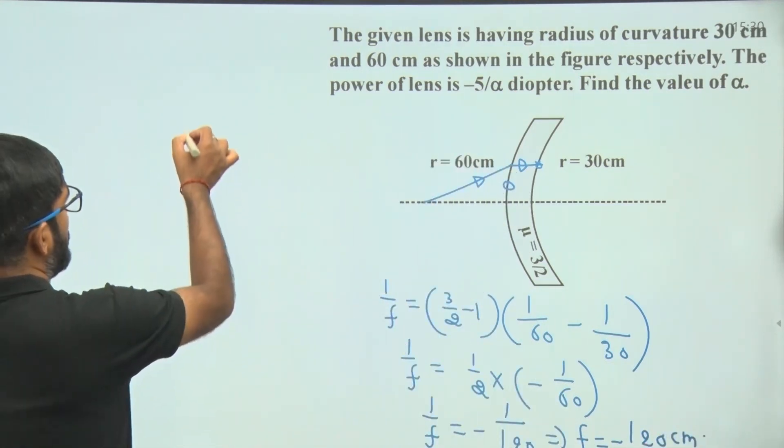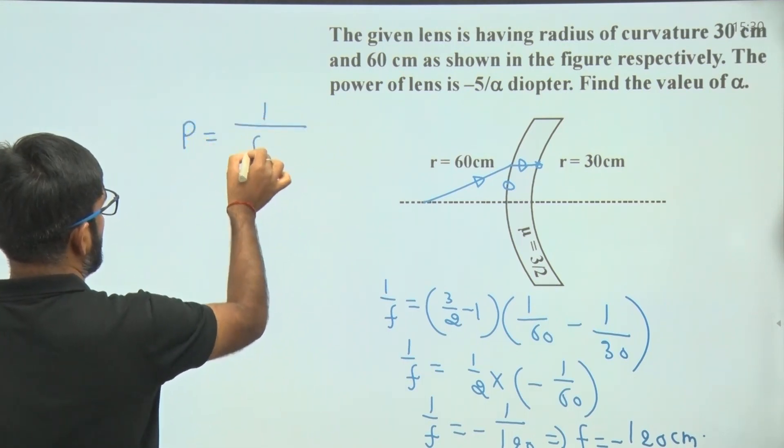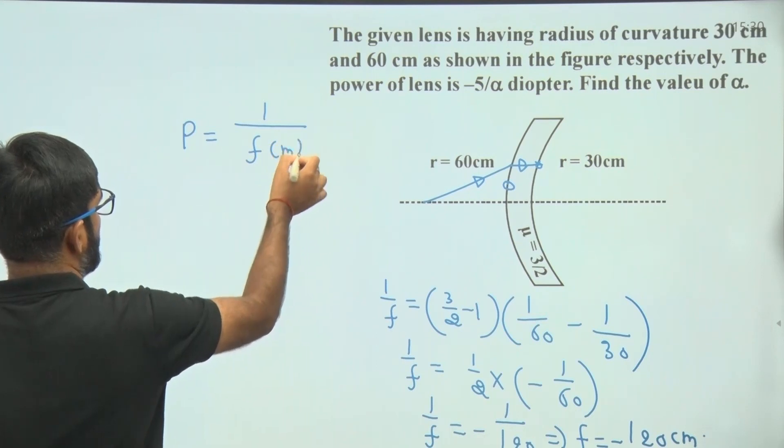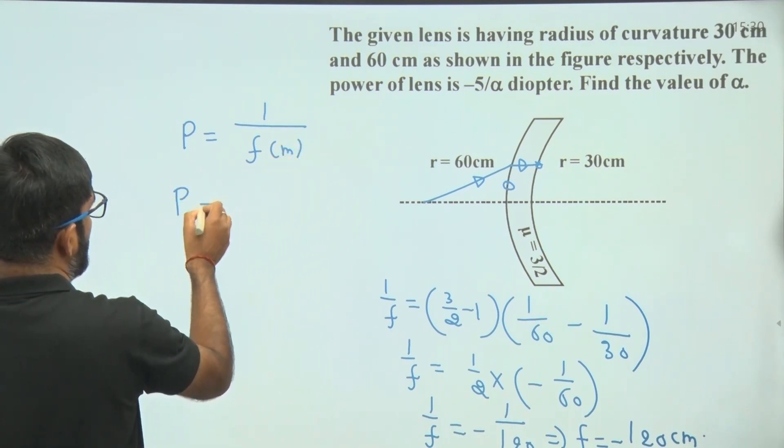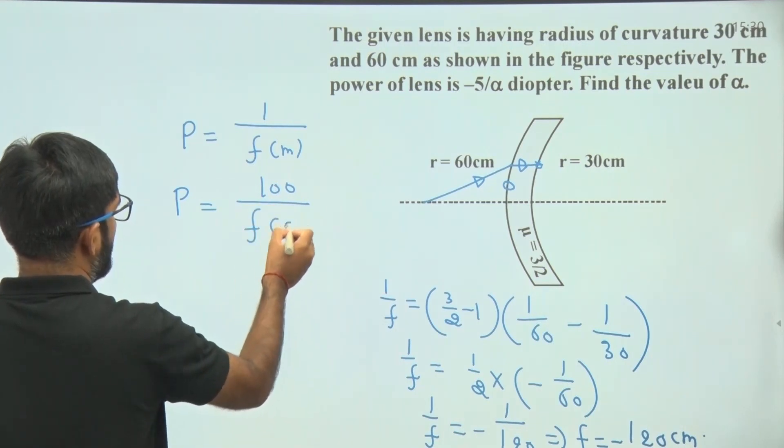Now we have to calculate the power of the lens. Power of the lens is given by 1 by f if f is in meters, and we write this power as 100 by f if f is in centimeters.